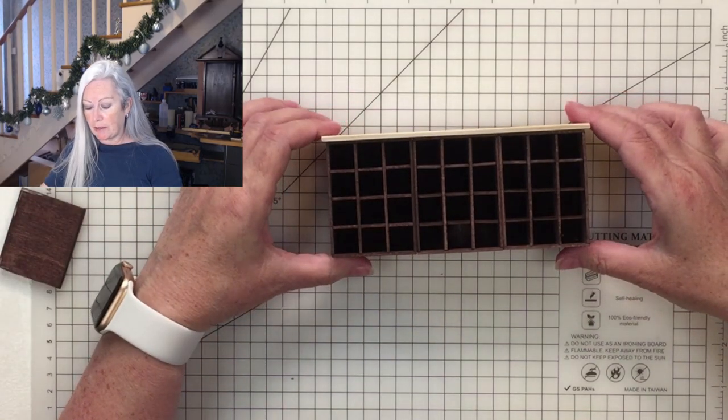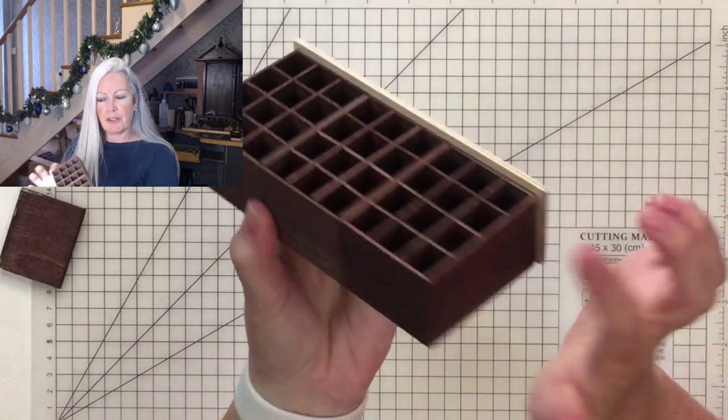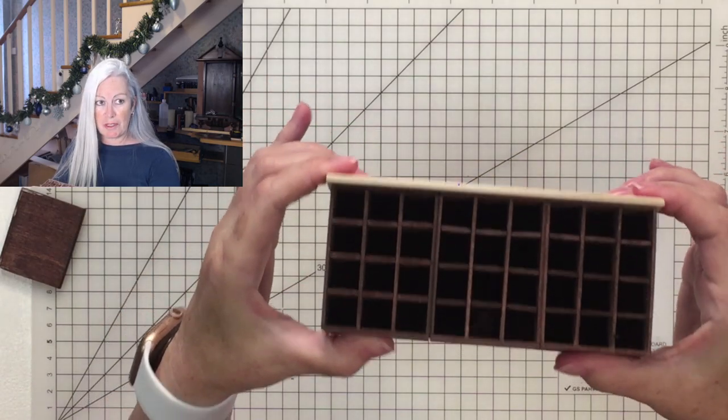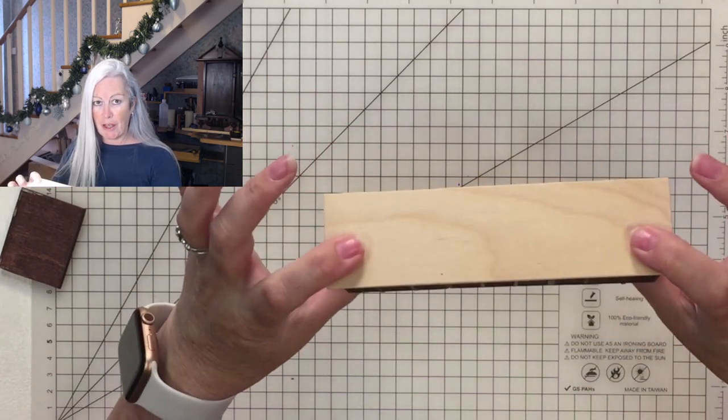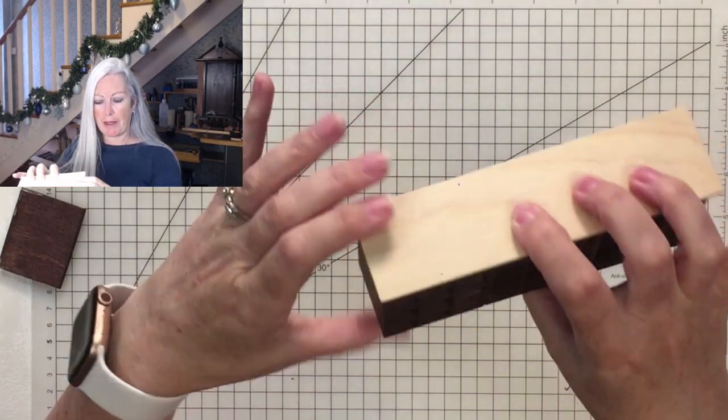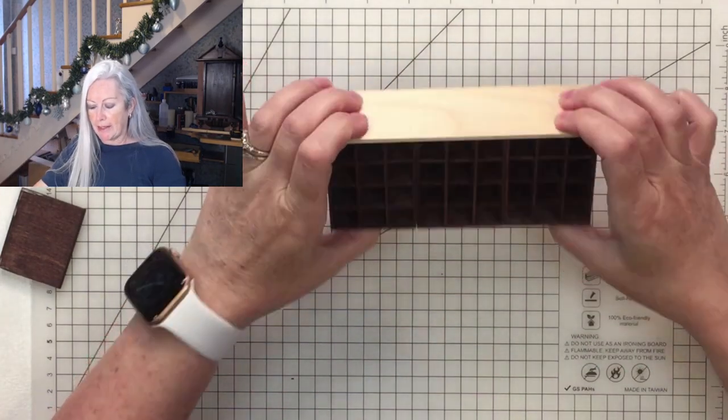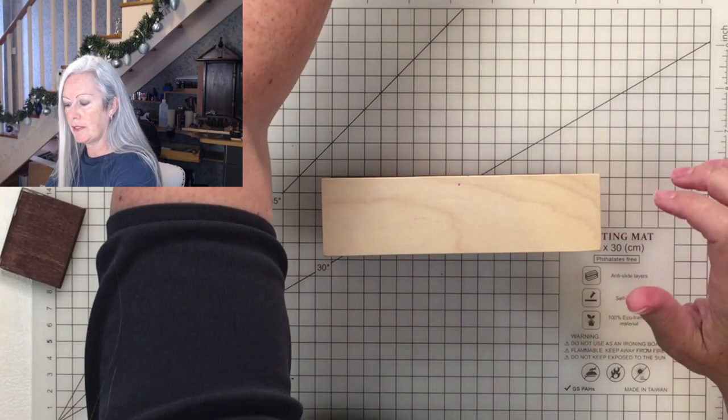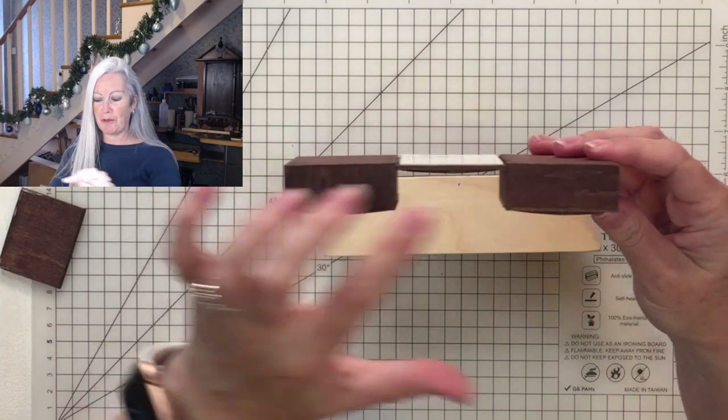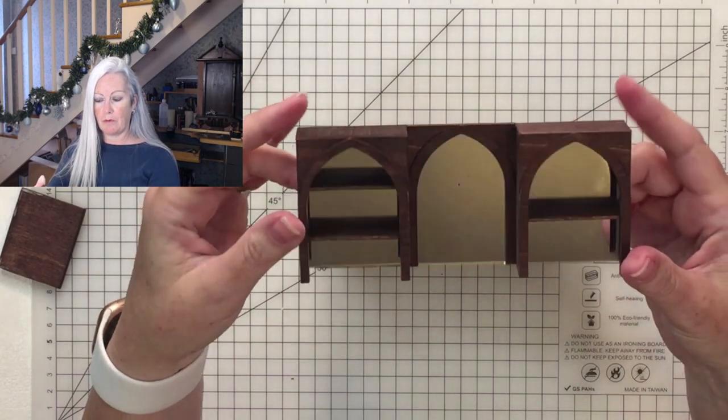I also did a little overhang on each end and I've kept it just for the video at the minute not stained so you can see the difference. It will line up with the back flush with the back and then overhang around. Then I did the same thing, I glued my two shelf units there and then the one mirror with the frame.